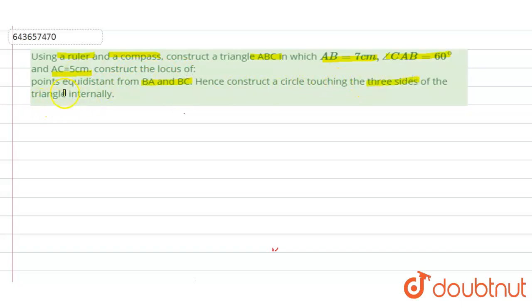of the triangle internally. First of all, draw line segment AB at 7 centimeter like this. AB is 7 centimeter.